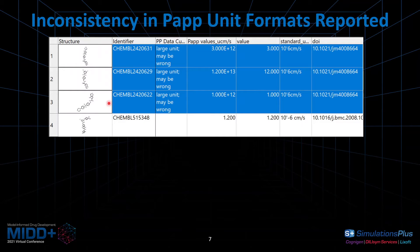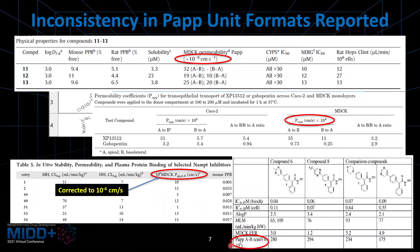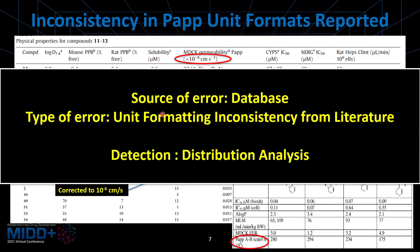Here is a screenshot from the actual project. These structures have very large PAPP values — on the scale of a million or more centimeters per second — which doesn't make sense because it's way beyond the distribution of the entire dataset. When we look at the literature, this is more of a formatting issue, so we corrected it to micro centimeters per second. Just to show how differently units are being reported: there are several different formatting styles seen in the literature. This type of mistake is actually coming from the database, but it comes because of unit formatting inconsistency in the literature. These can normally be detected by distribution analysis because they tend to fall outside the distribution range of the majority of the dataset.